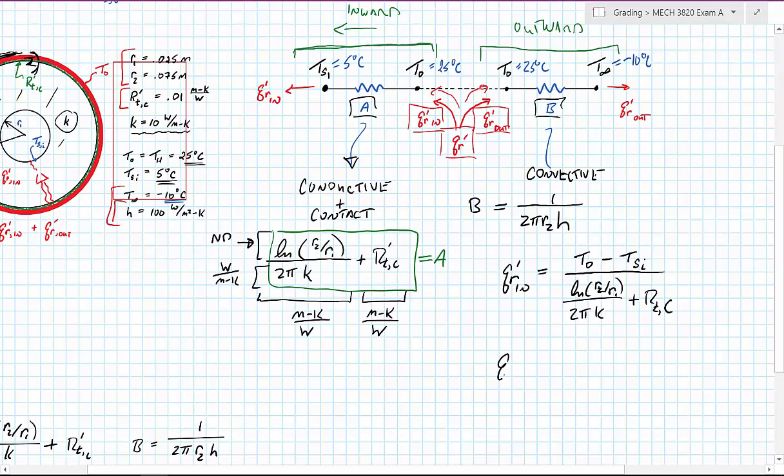And Q_R out is again equal to a temperature difference, in this case T_0 minus T infinity. And the resistive term is just the convective resistance, which is 1 over 2π R_2 H.